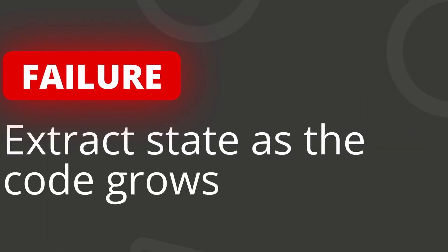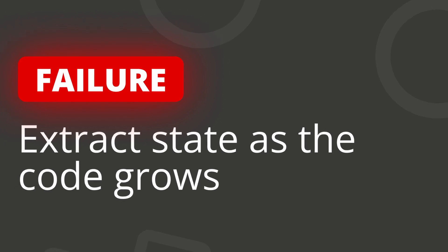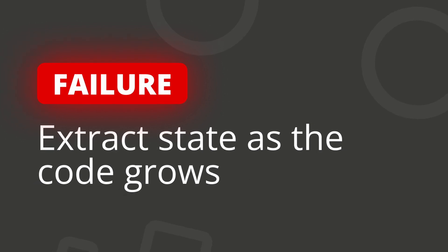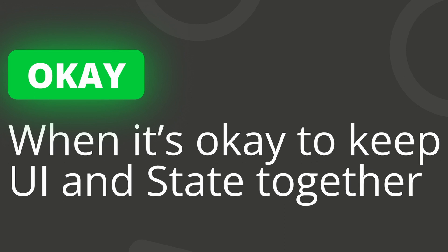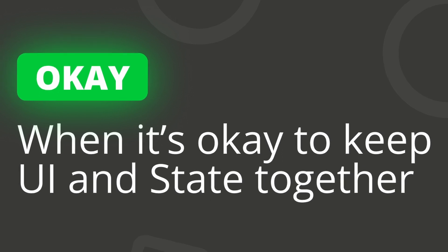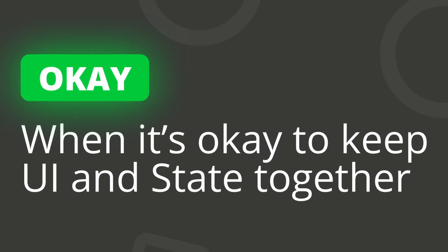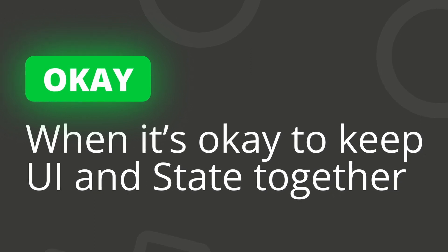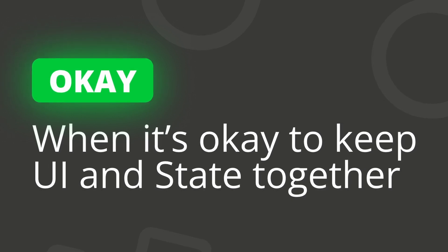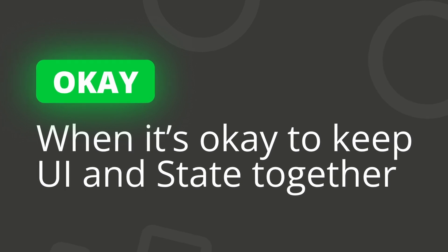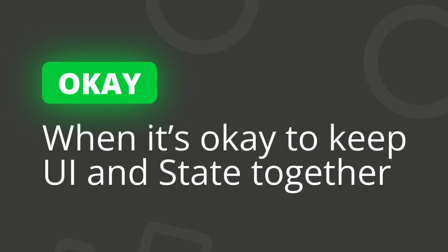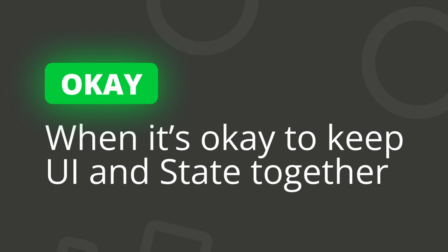The mistake that a lot of developers make, and teams that I've consulted with, is they fail to extract the state from the UI as it grows larger. It's fine to keep UI and state in the same file when your widget has some internal state logic — things like an image carousel with page indicators, widgets with checkboxes, anything small. To put it more clearly: nothing that requires complex conditions to determine the state to show on screen. If it's true or false, an index number, an integer, or a double to control a slider, it's fine to keep those in the same file using a stateful widget.